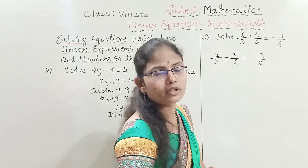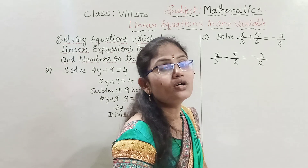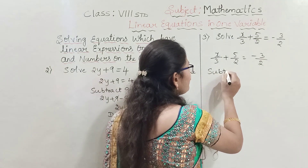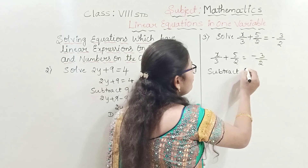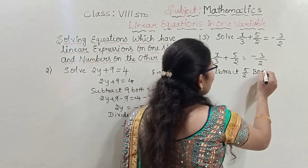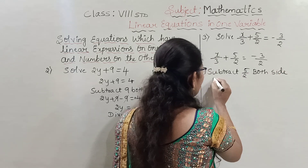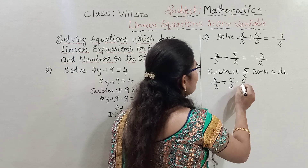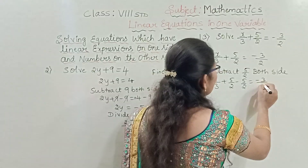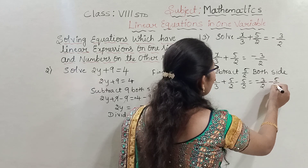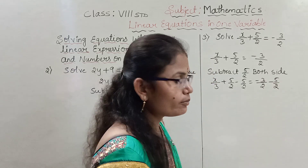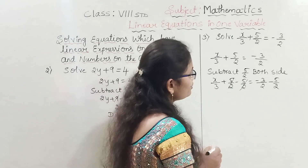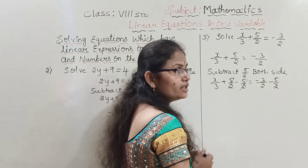To remove 5 by 2, we subtract 5 by 2 from both sides. Then: x by 3 plus 5 by 2 minus 5 by 2 equals minus 3 by 2 minus 5 by 2. The 5 by 2 terms cancel on the left. On the RHS, minus 3 by 2 minus 5 by 2 remains.